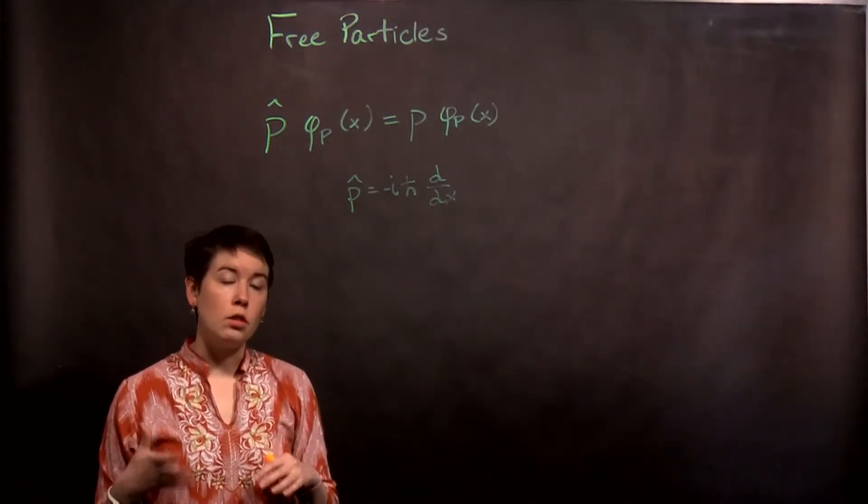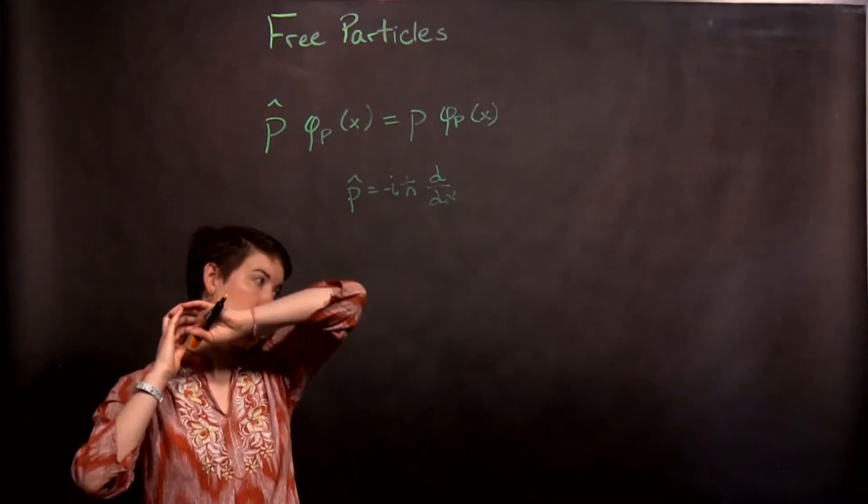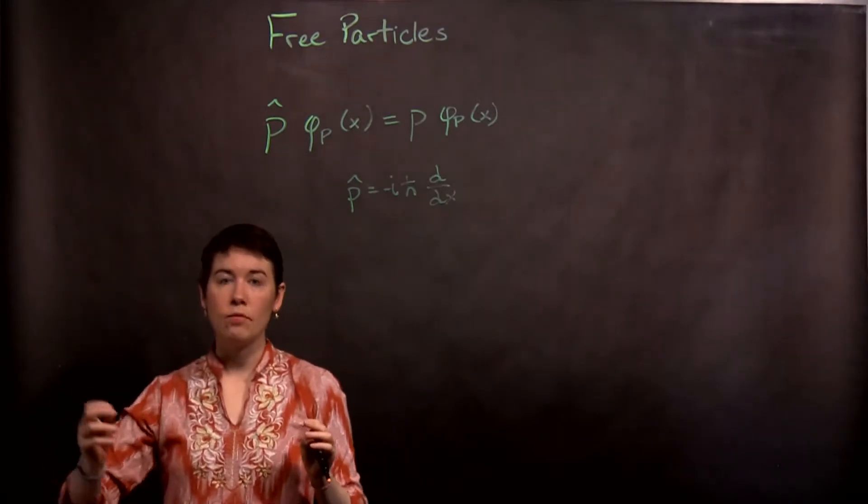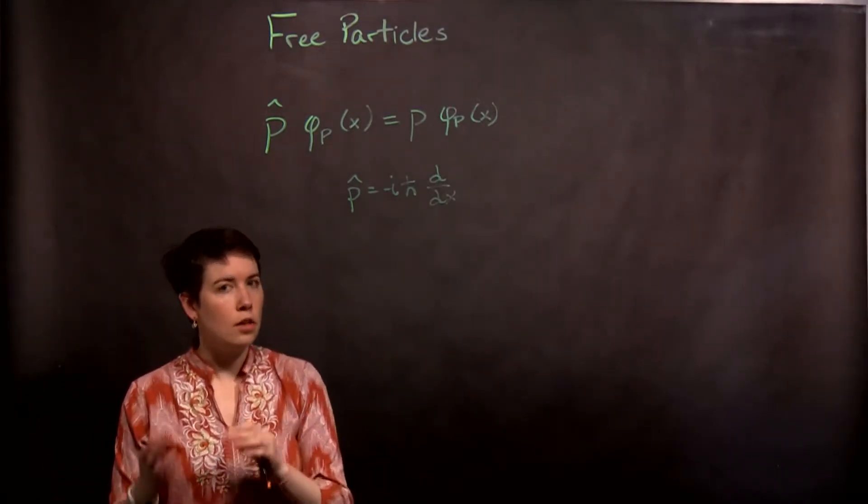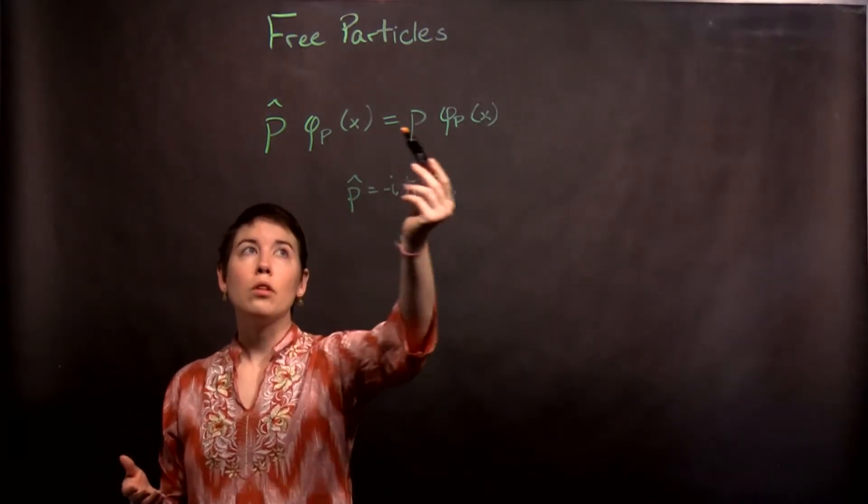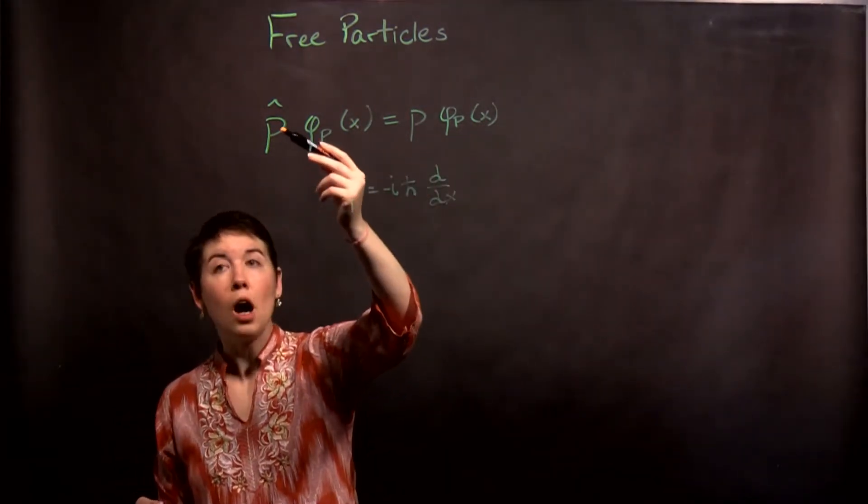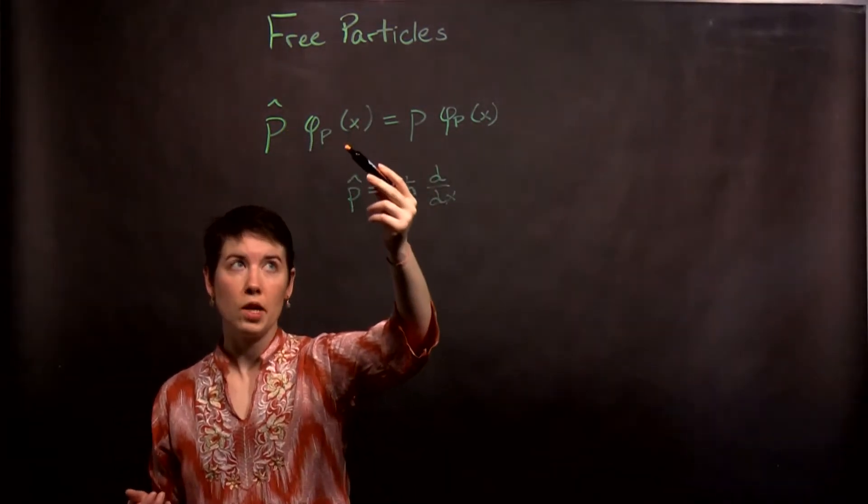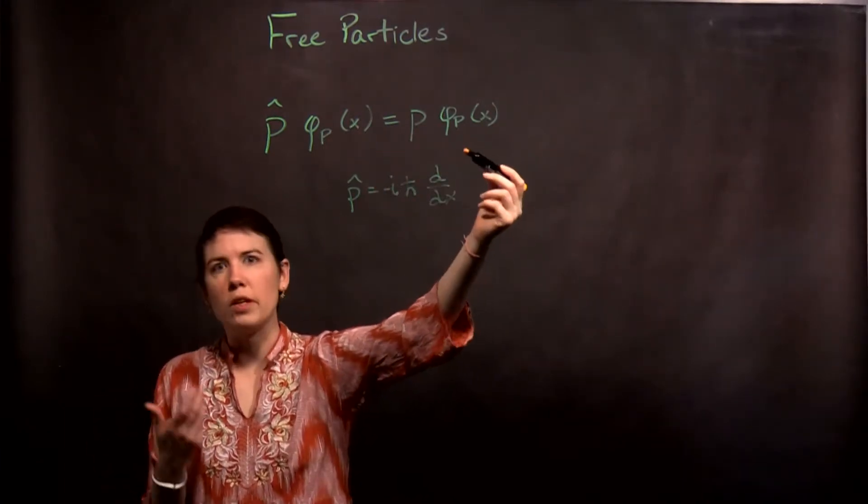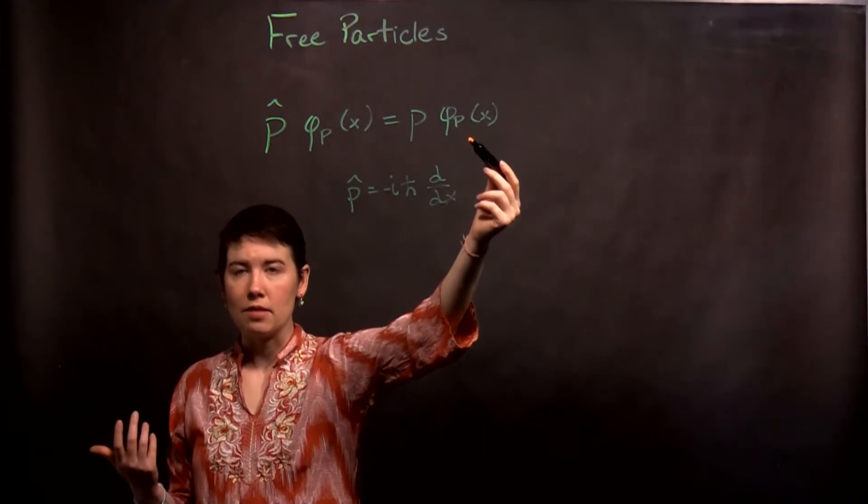So instead, if we have a free particle, it makes much more sense to talk about a free particle that is traveling to the right, or a free particle that is traveling to the left. So we don't necessarily want energy eigenstates, we want momentum eigenstates. So that would look like this equation. We take our momentum operator, we're going to apply it to a state, we'll get back a fixed value of the momentum, and then that state. So this would just be the equation defining our momentum eigenstates.